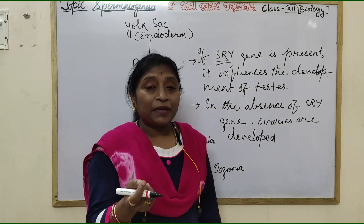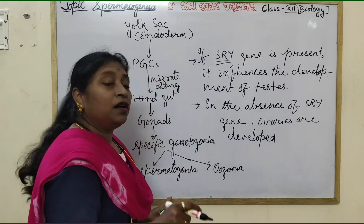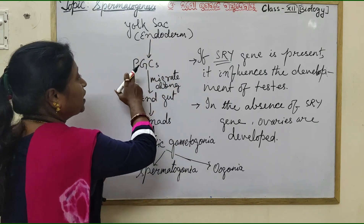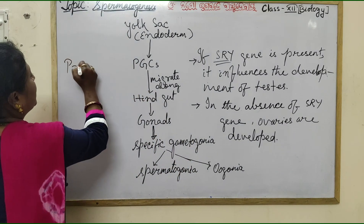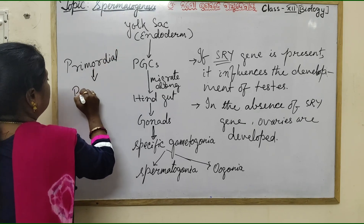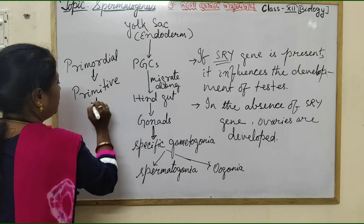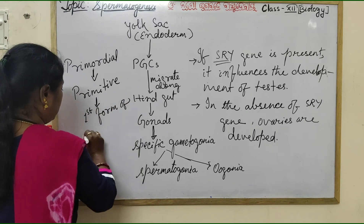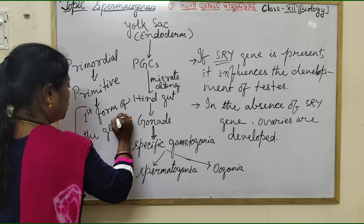So the haploid male gametes — that is, haploid sperms — are produced from diploid spermatogonia. What is spermatogonia? They are originally the primordial germ cells. 'Primordial' means primitive — that is, the first form of the germ cell, or the first form of the sex cell.